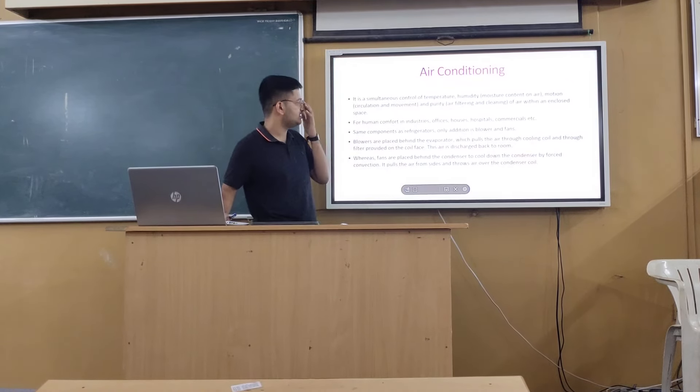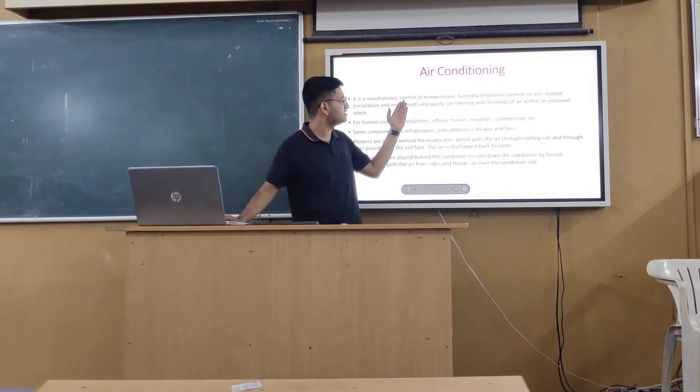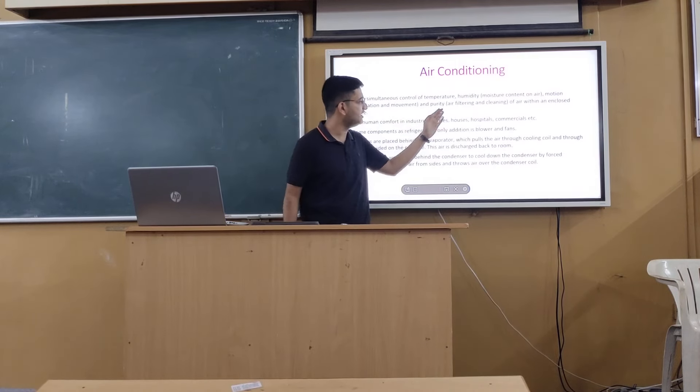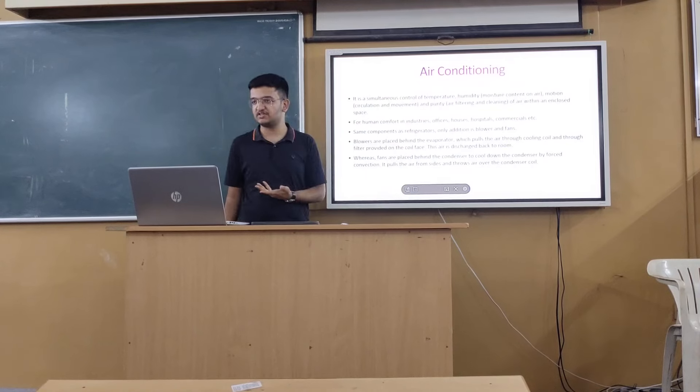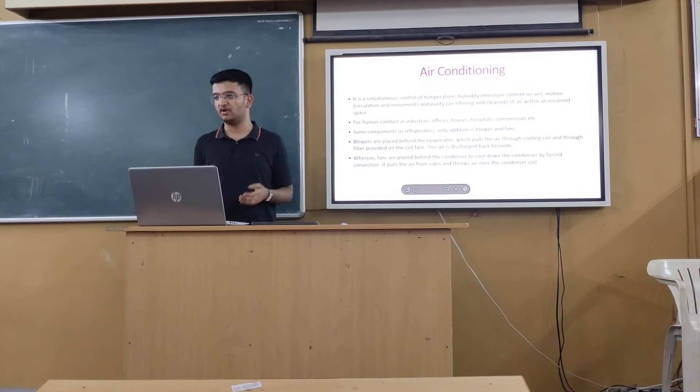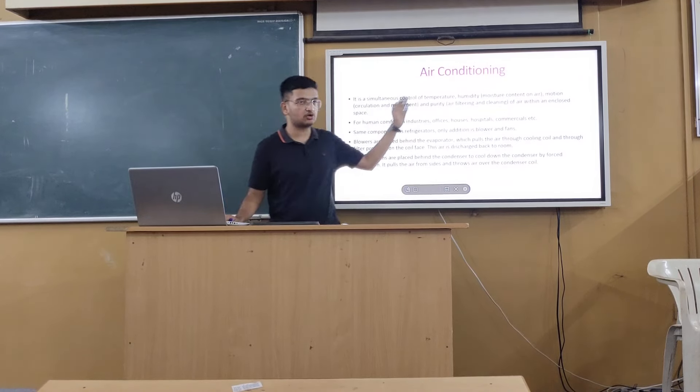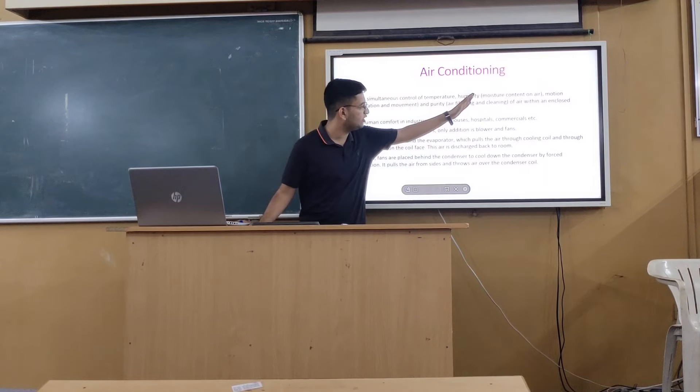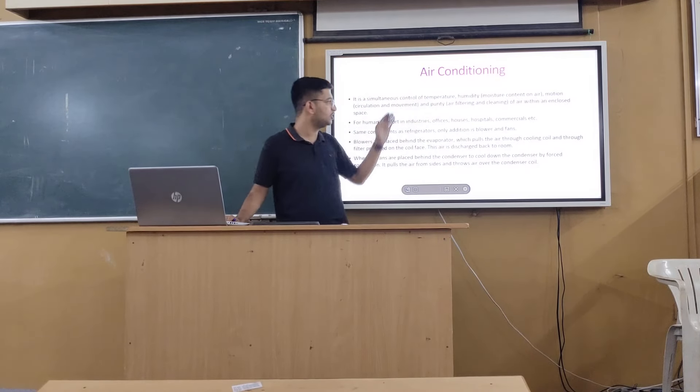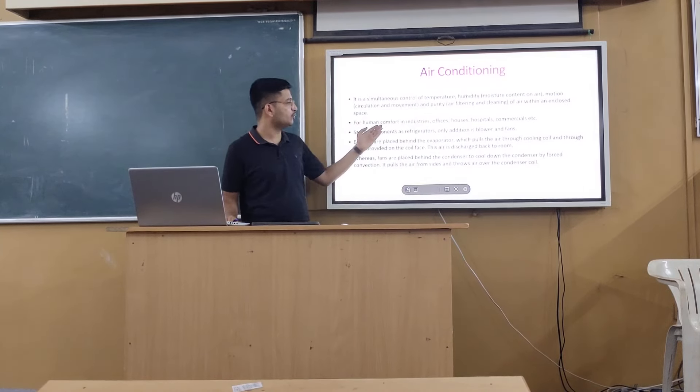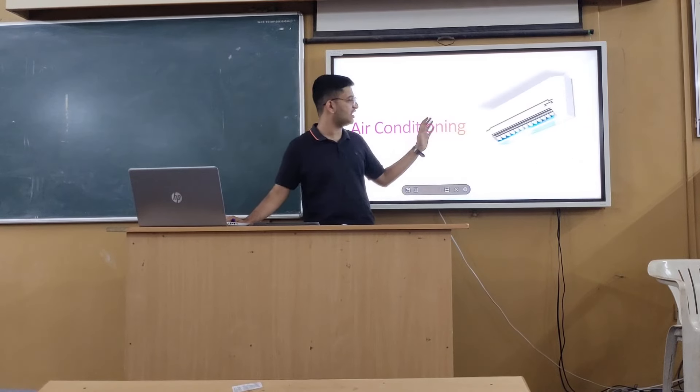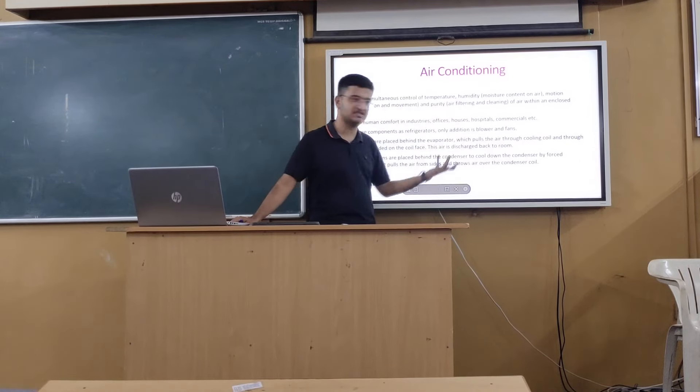What is air conditioning basically? It is the simultaneous control of temperature, humidity, and purity of air. In the refrigerator, we just wanted to cool down. We didn't think about the humidity or purity. But in air conditioning, along with the control of temperature, we also control the humidity and purity of air. For human comfort, it is used in many houses, residences, schools, and apartments.